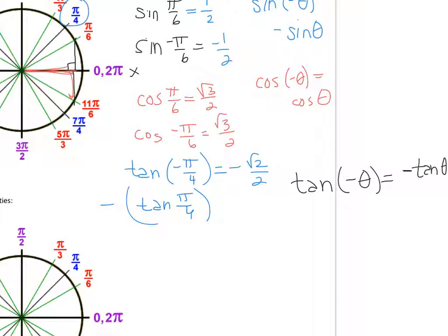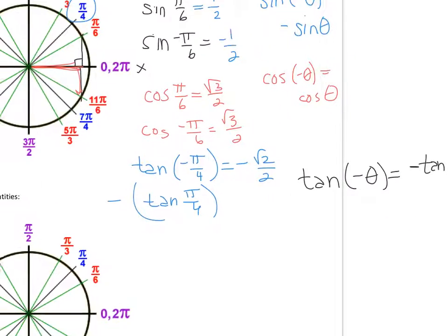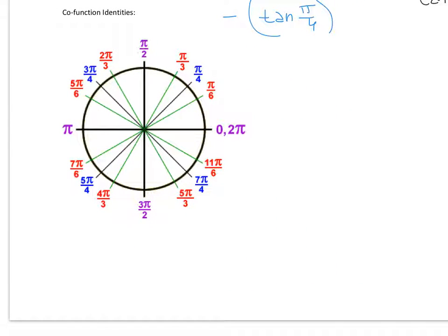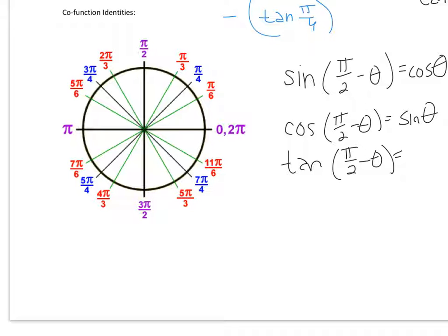So sine and tangent both have the same negative angle identities, but cosine is different. Now I'm going to write out the co-function identities. The co-function identities are: sine of (pi over 2 minus theta) equals cosine of theta; cosine of (pi over 2 minus theta) equals sine of theta; and tangent of (pi over 2 minus theta) equals cotangent of theta.